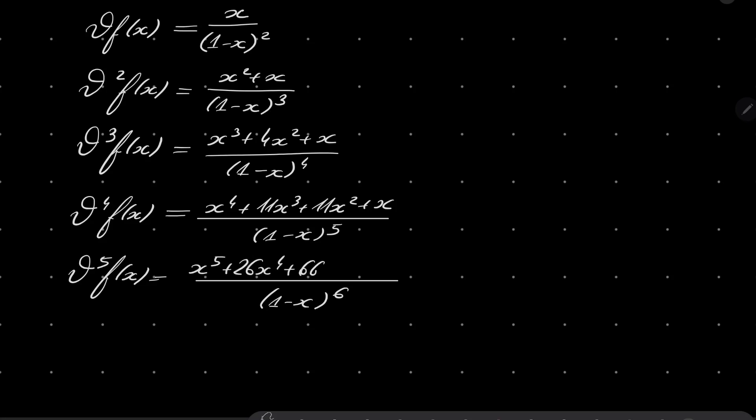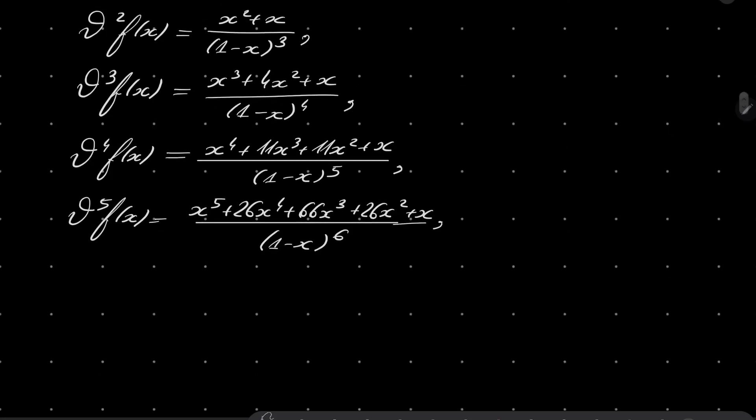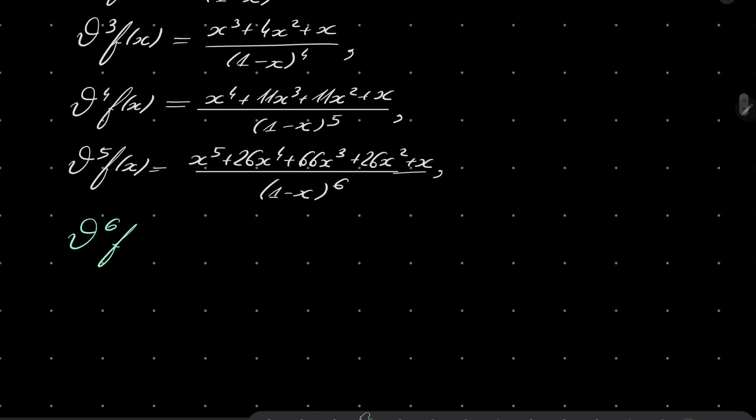Again, lots and lots of details are behind the scenes. And one last time, theta to the sixth application of this theta operator will give us 1 over 1 minus x to the power of 7 times x to the sixth power plus 57 x to the fifth power plus 302 x to the fourth power plus 302 x to the third power plus 57 x squared plus x.